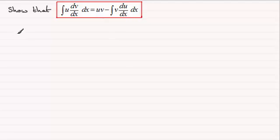So to do it all we do is return back to the product rule for differentiation, that is if y equals u times v, where u and v are functions of x.